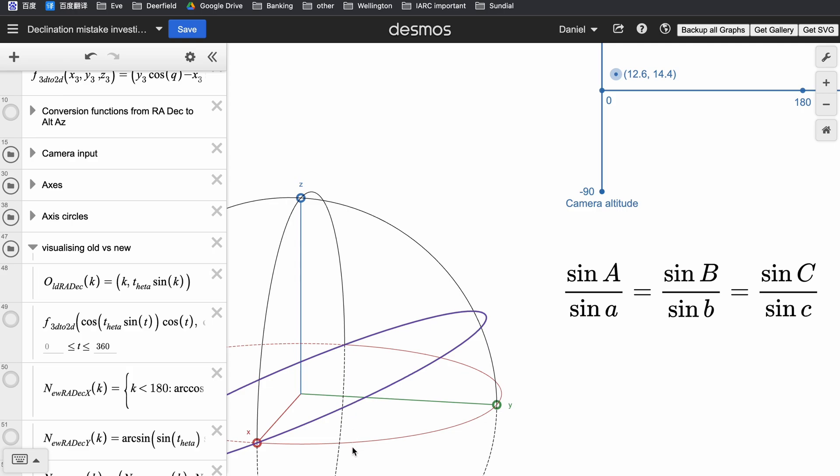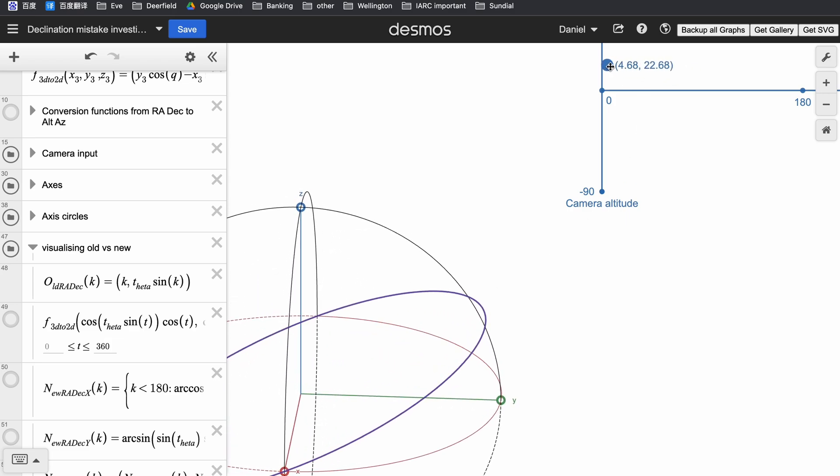So calling the length of the declination here d, we know that sine d over sine theta equals sine k over sine of 90. And rearranging that, we can get the value of d. Now that we have the length of k and the value of d, we can just make use of the spherical Pythagorean theorem to find the value of the right ascension. And combining both, we have the declination and right ascension of any point that the sun could be at.